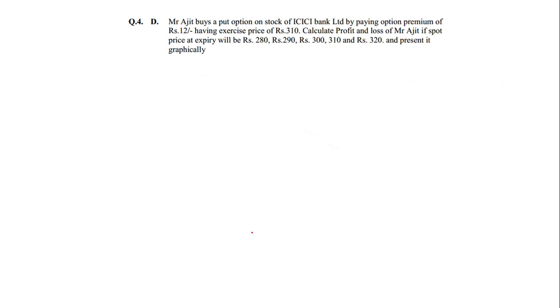The last question, Question 4: Aajit buys a put option. This is the vice versa of the call option sum we just did — this is buying a put option. The premium is 12, the exercise price is 310, and the spot prices are again given to us.